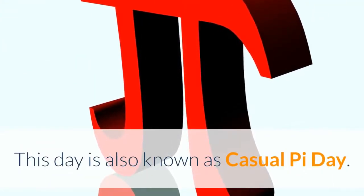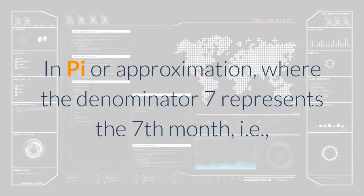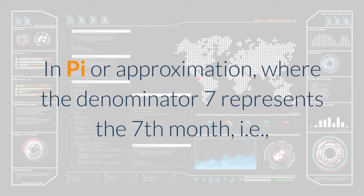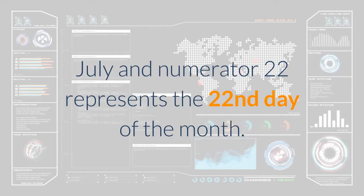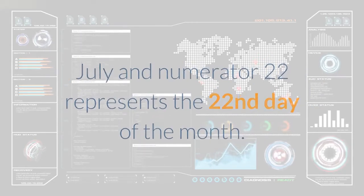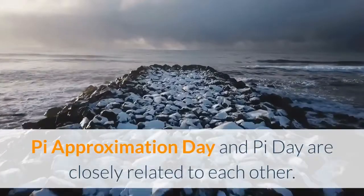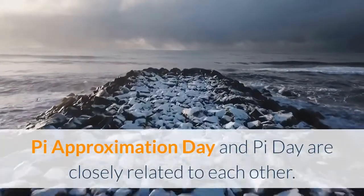This day is also known as Casual Pi Day. In Pi's approximation 22/7, the denominator 7 represents the 7th month, July, and numerator 22 represents the 22nd day of the month. Pi Approximation Day and Pi Day are closely related to each other.